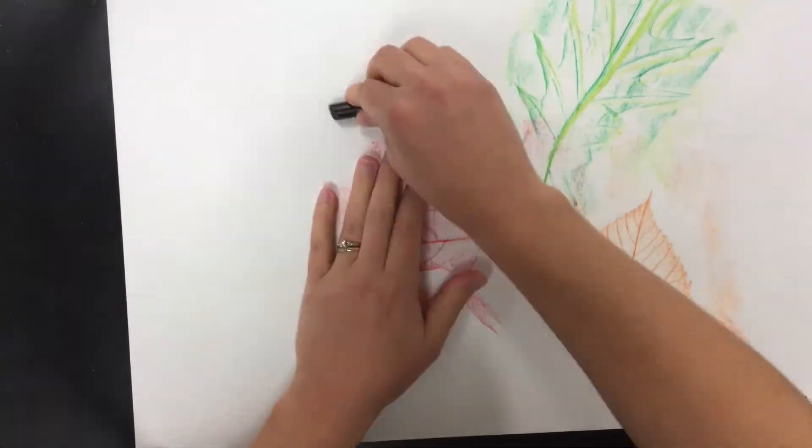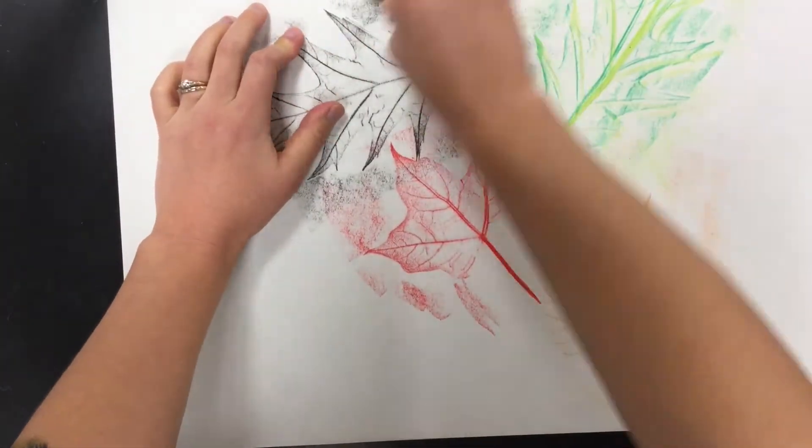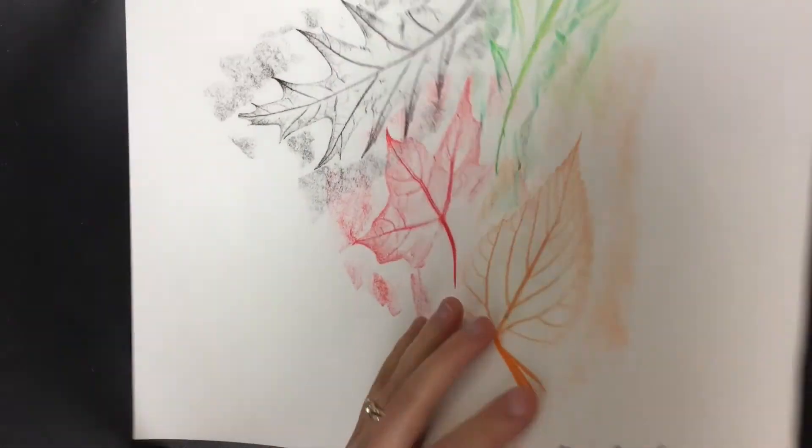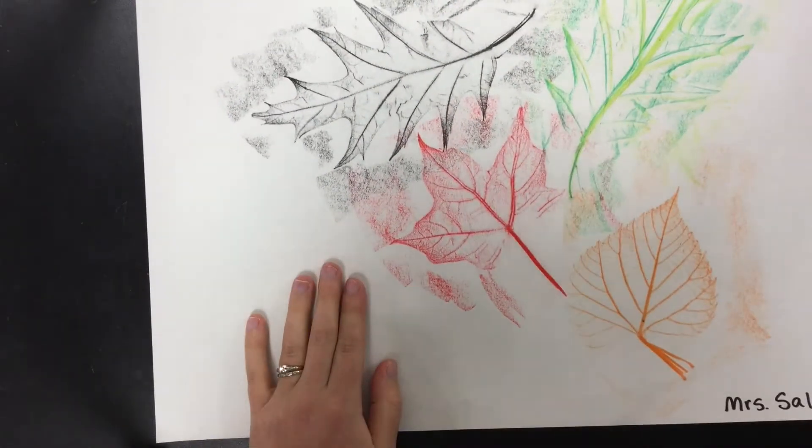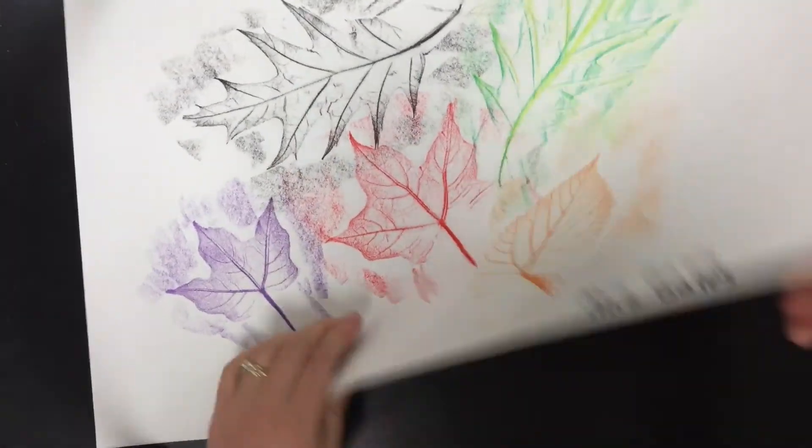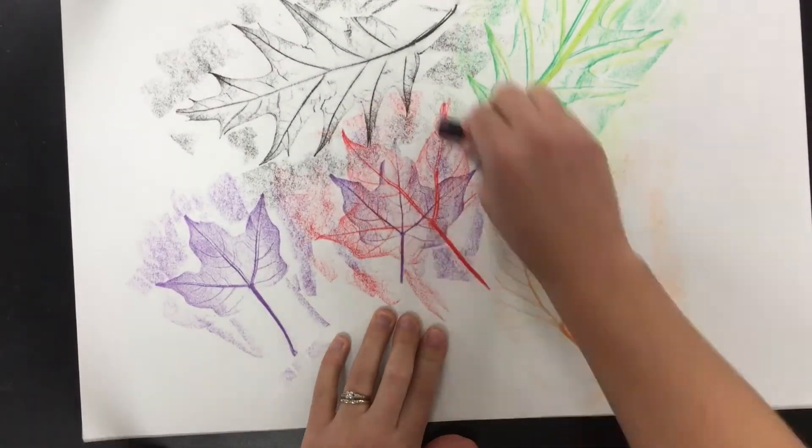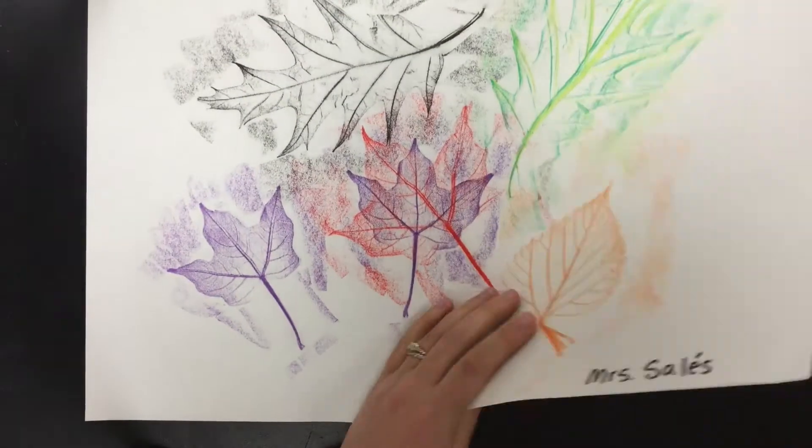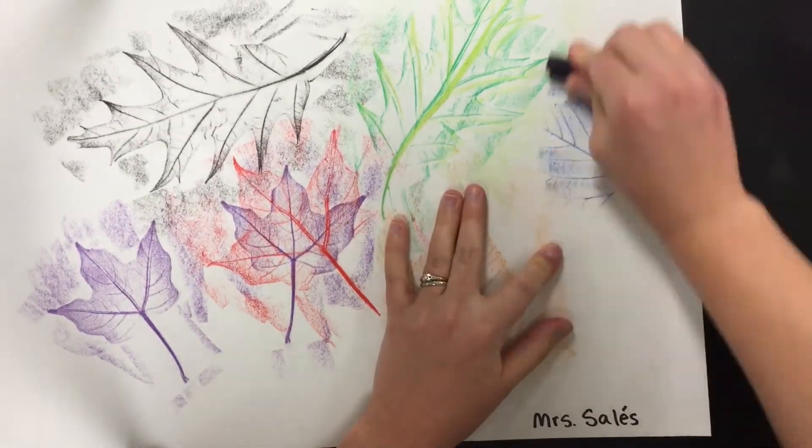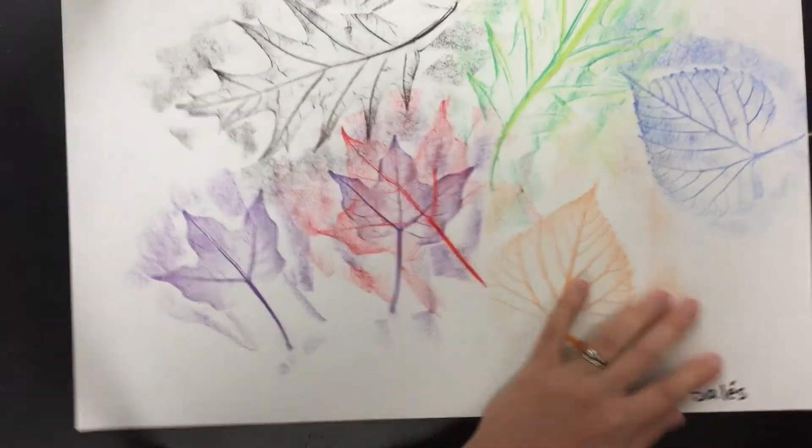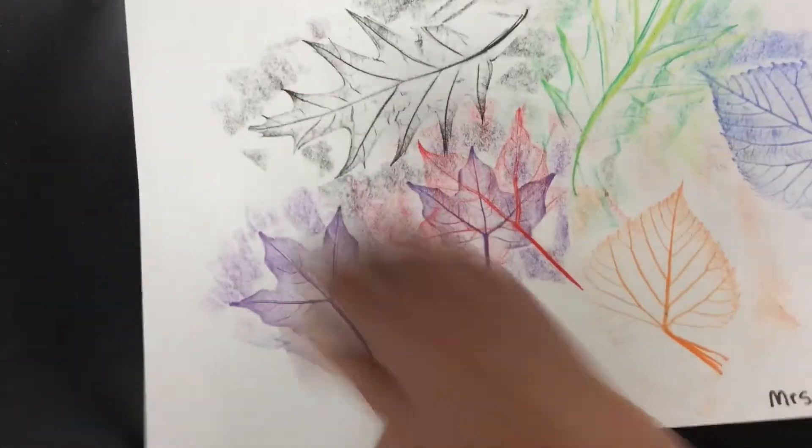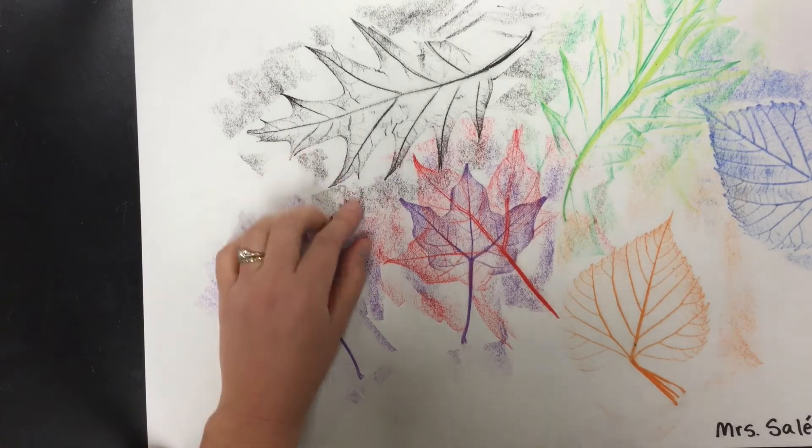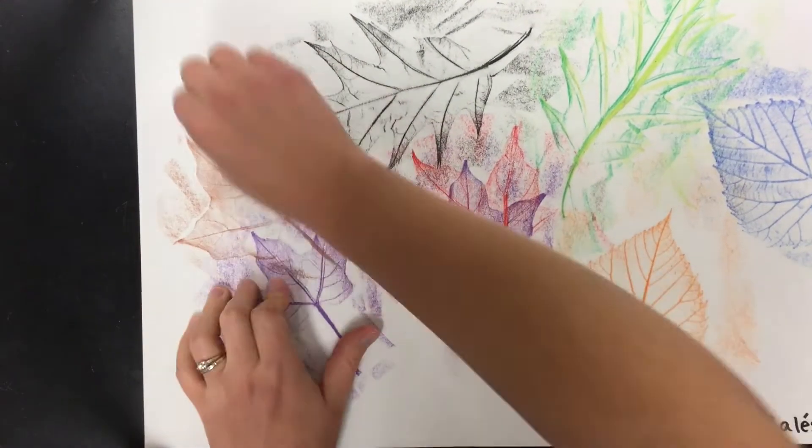Keep using leaves and keep coloring over them, making these texture rubbings. You can even do two colors at once if you want. Keep making texture rubbings until your paper is pretty much all filled up. You can even overlap. That means you can do leaves over other leaves. That's pretty cool.